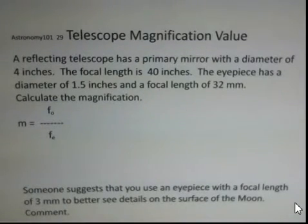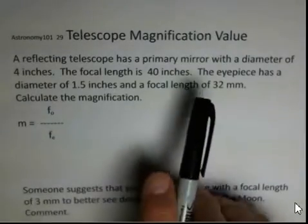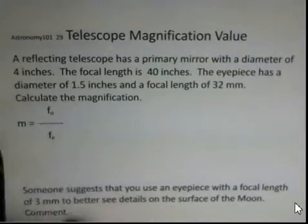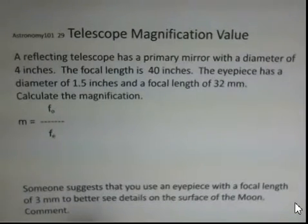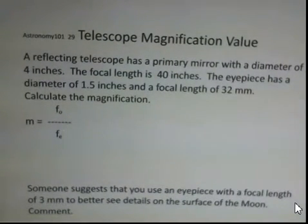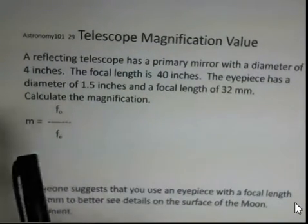But the primary telescope function is to collect light, make us be able to see dimmer objects. Let's suppose we have a primary mirror that has a diameter of 4 inches and the focal length is 40 inches. So this would be an f10 system, 40 divided by 4.